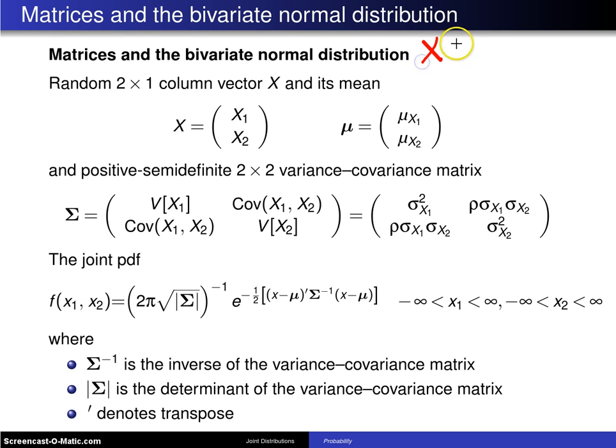First thing that's going to happen is the usual x and y that we use for the bivariate normal random variables is going to be converted to x1 and x2. And the reason for that is this is eventually going to be taken out of the world of bivariate and up to multivariate.